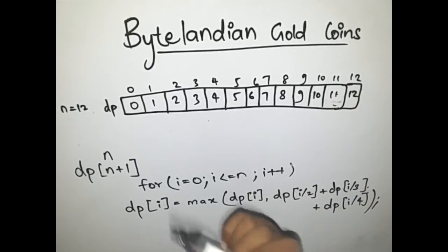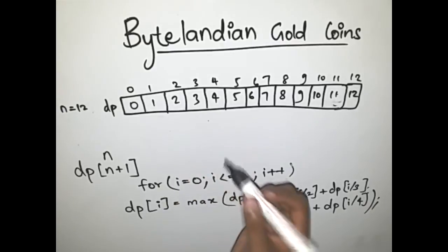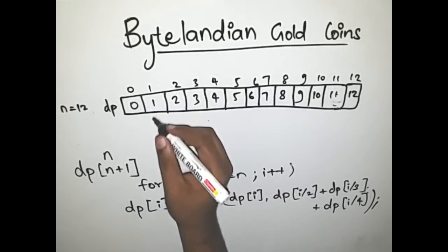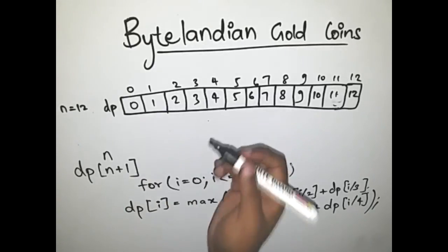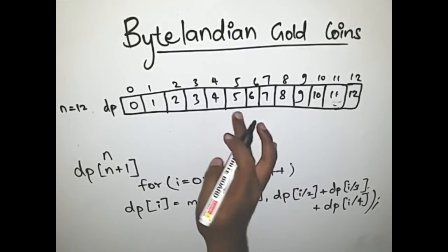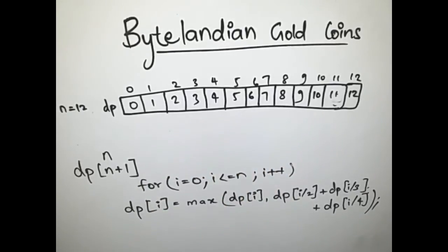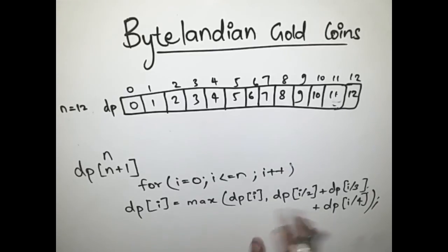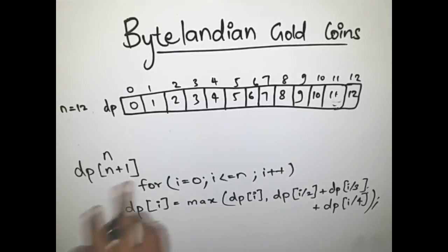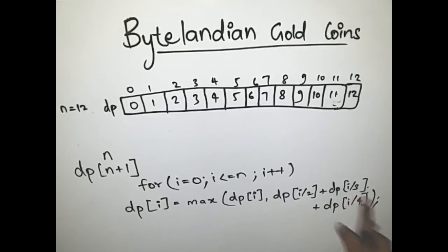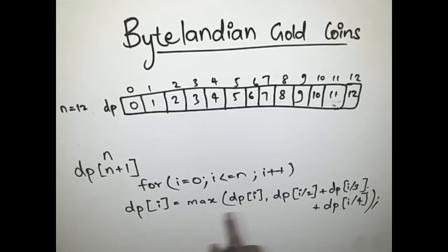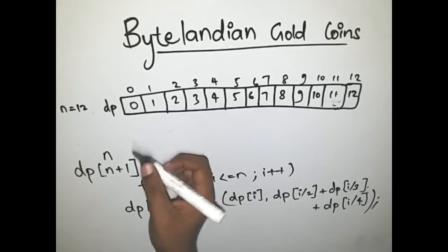We write down the indices and initialize every element with its index value, so dp[0] = 0, dp[1] = 1, and so on. This gives us a choice to select the given element or select the max between the given element and the result if you do the exchange: dp[i/2] + dp[i/3] + dp[i/4]. For i=0, everything evaluates to 0, so dp[0] remains 0.